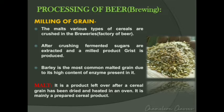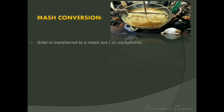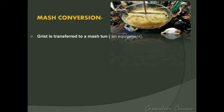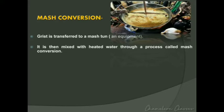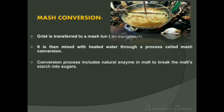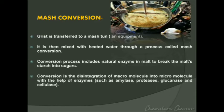Malted barley is the most common malted grain as it has the highest enzyme content. The second step is mash conversion, where the grist is transferred to the mash tun — a piece of equipment — and mixed with heated water. Conversion is the disintegration of various macromolecules into micromolecules with the help of enzymes such as amylases, proteases, glucanases, and cellulase, which are important for beer production.